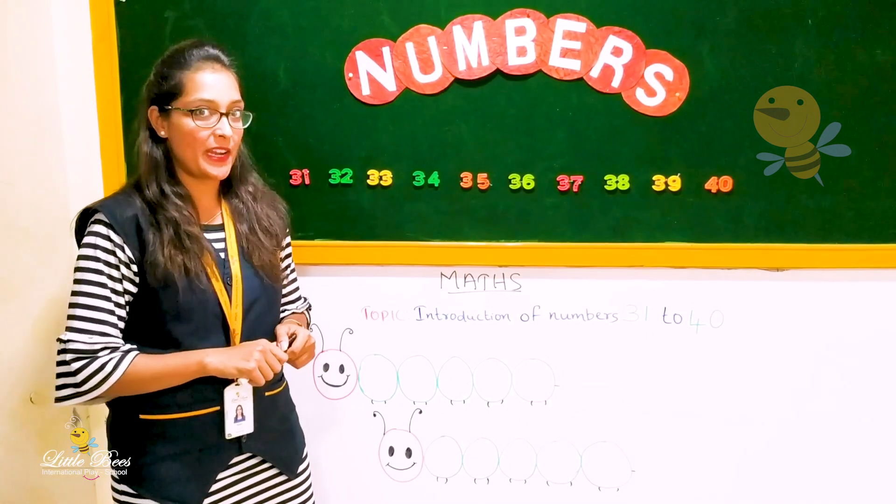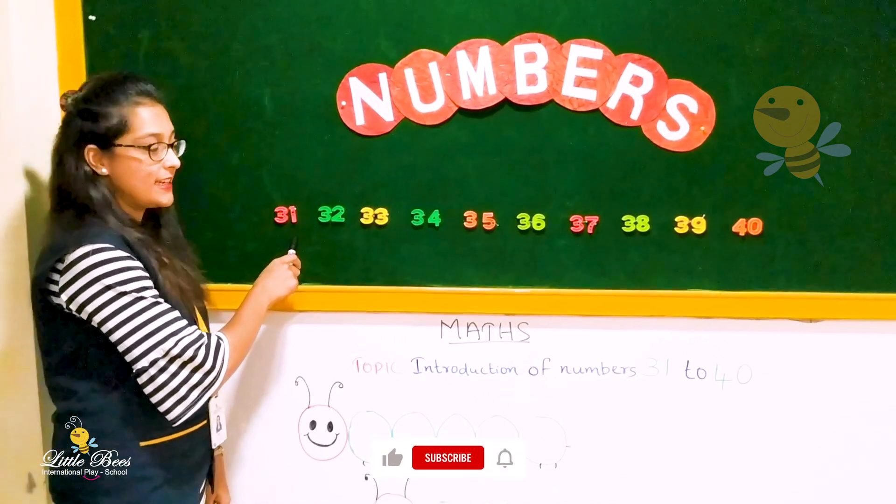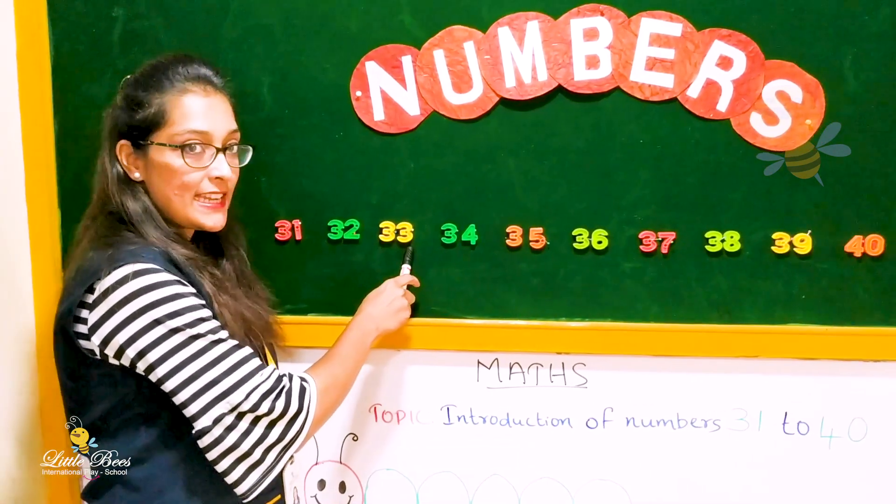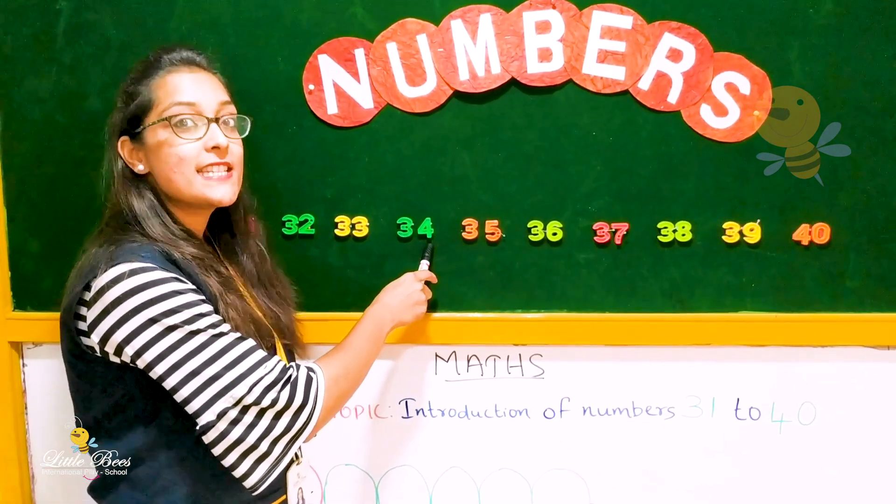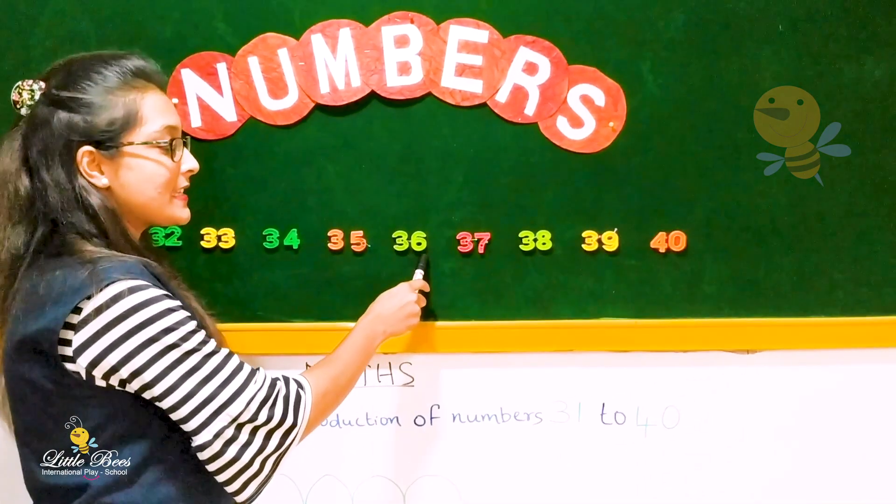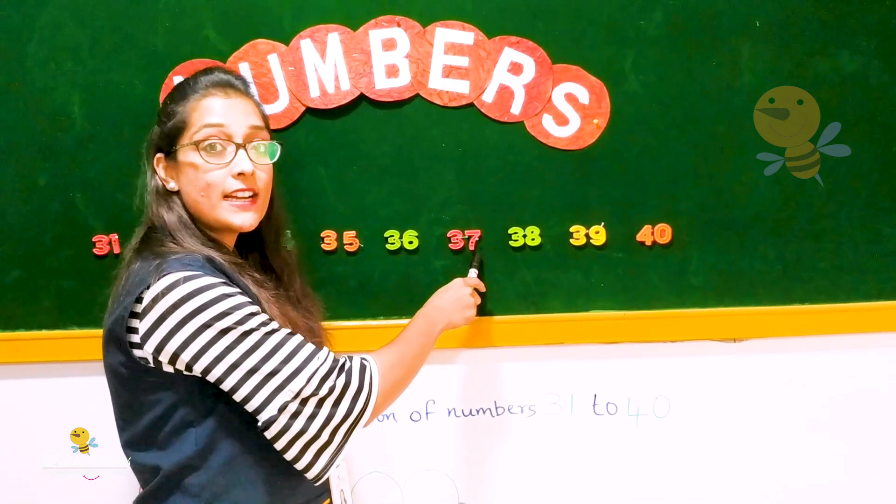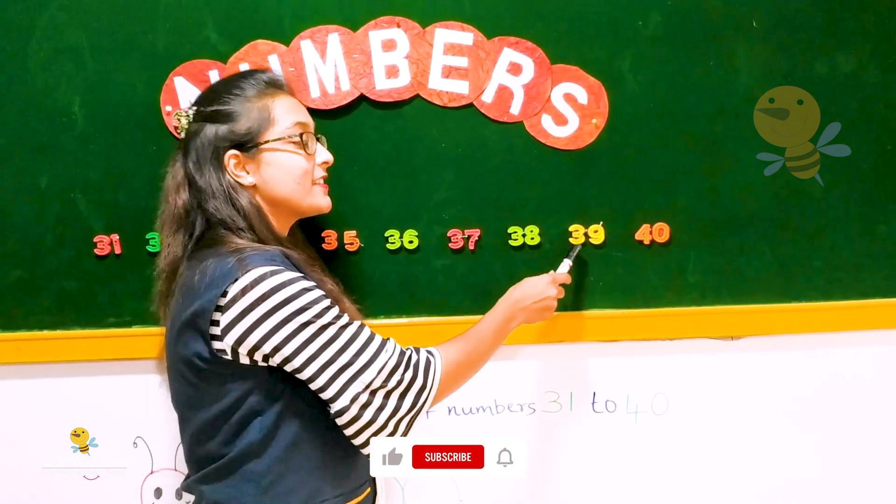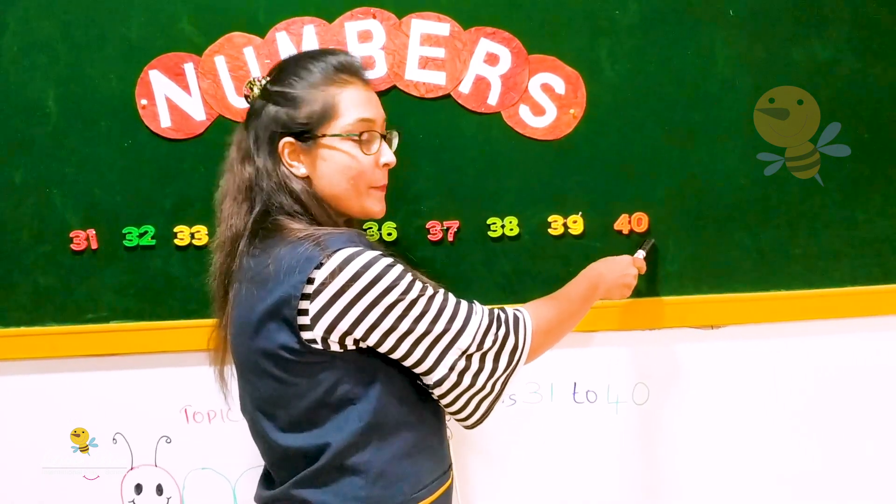Repeat the numbers after me. Okay? 31, 31. 32, 32. 33, 33. 34, 34. 35, 35. 36, 36. 37, 38. 38, 38. 39, 40. 40.